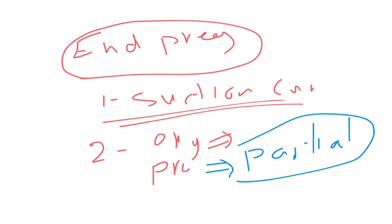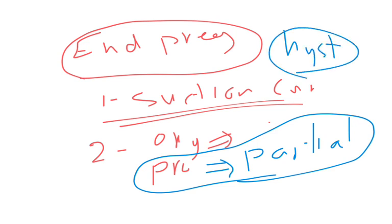The last option for us is hysterectomy. Hysterectomy is only done for women in their 50 years old or in menopause who had completed her family. So hysterectomy is our last option. Why do we do hysterectomy? Hysterectomy is done because of risk of malignancy in molar pregnancy.